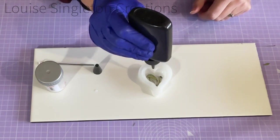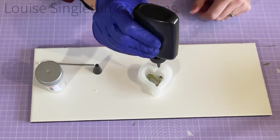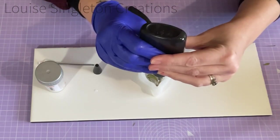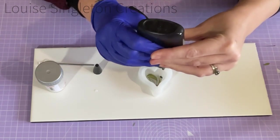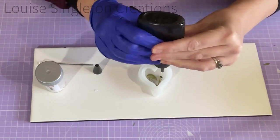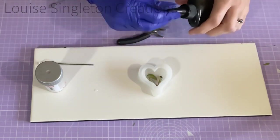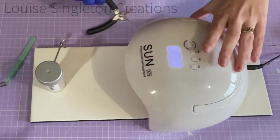Because I'm using the resin clear in this one, I've made it quite deep because the UV light will be able to get all the way through to cure it. If I had been using pigments or lots of foliage, I would have done more shallow layers.